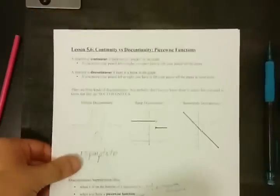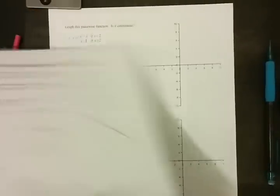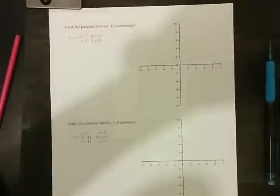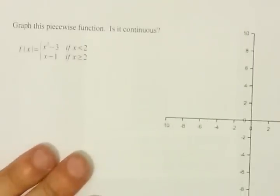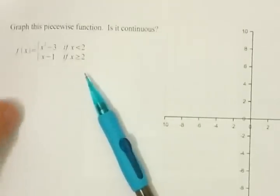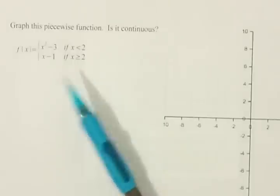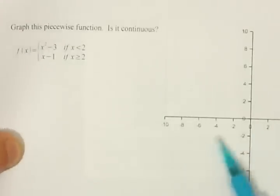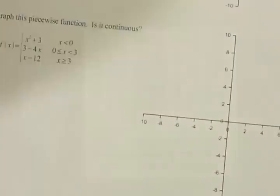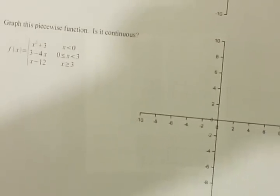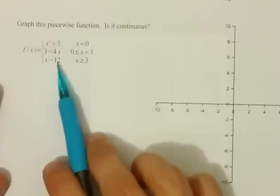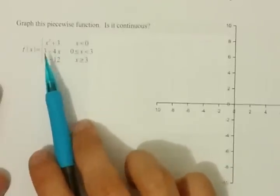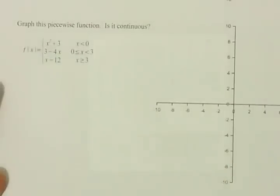Let's practice with a piecewise function broken up into three different pieces. We have a parabola, a line, and another line. Graph all of them yourself. The vertex for the parabola is at (0, 3), and I use the step pattern to get more points.